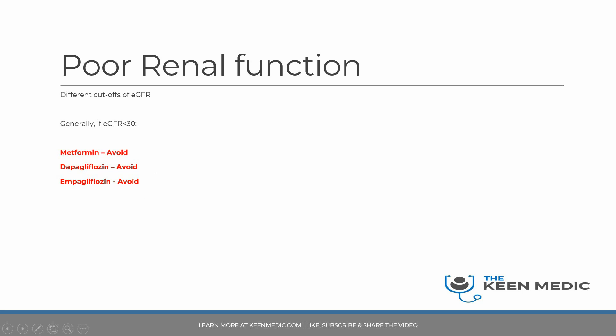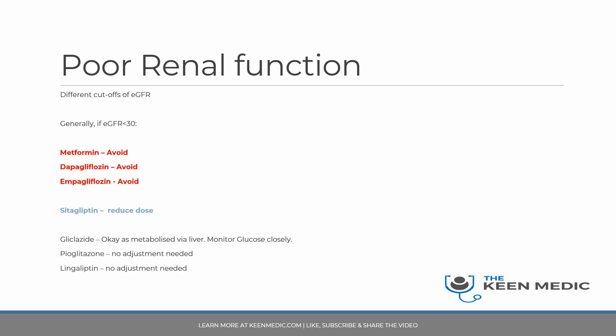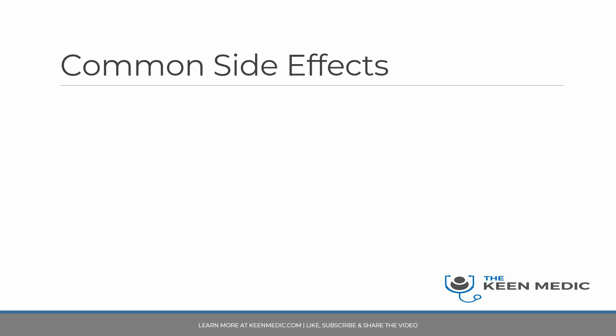The only agent needing dose reduction in poor renal function is sitagliptin. For the others — gliclazide, pioglitazone, and linagliptin — no dose adjustment is generally needed. However, if you're not sure, always seek the official opinion of the endocrine team. My key advice for PACES is: never take risks. If you can't access a reliable reference source immediately, say you would seek advice from the BNF and the endocrine team.